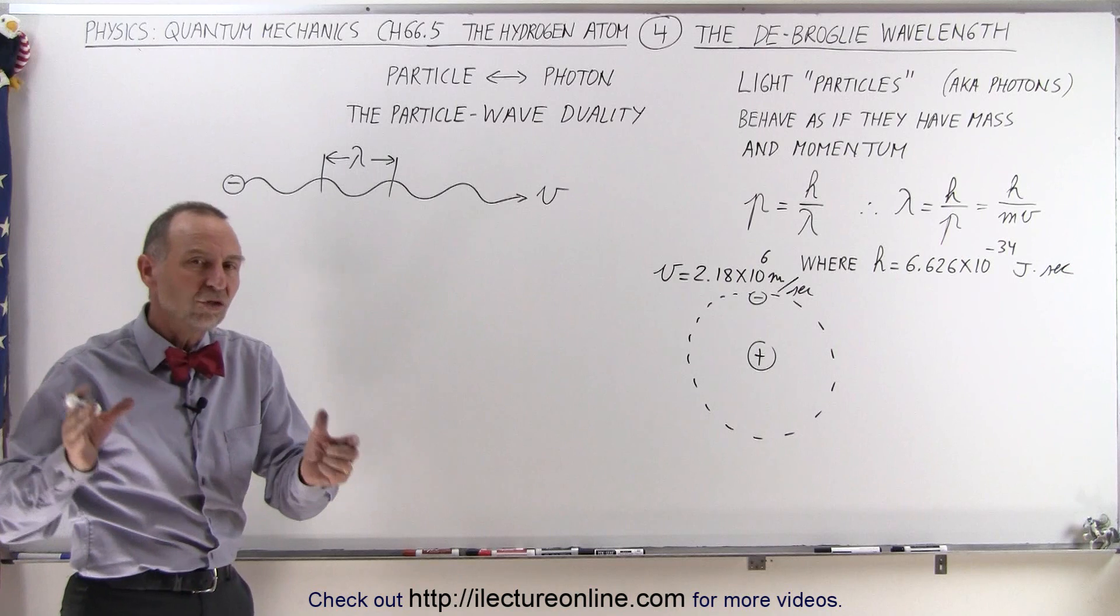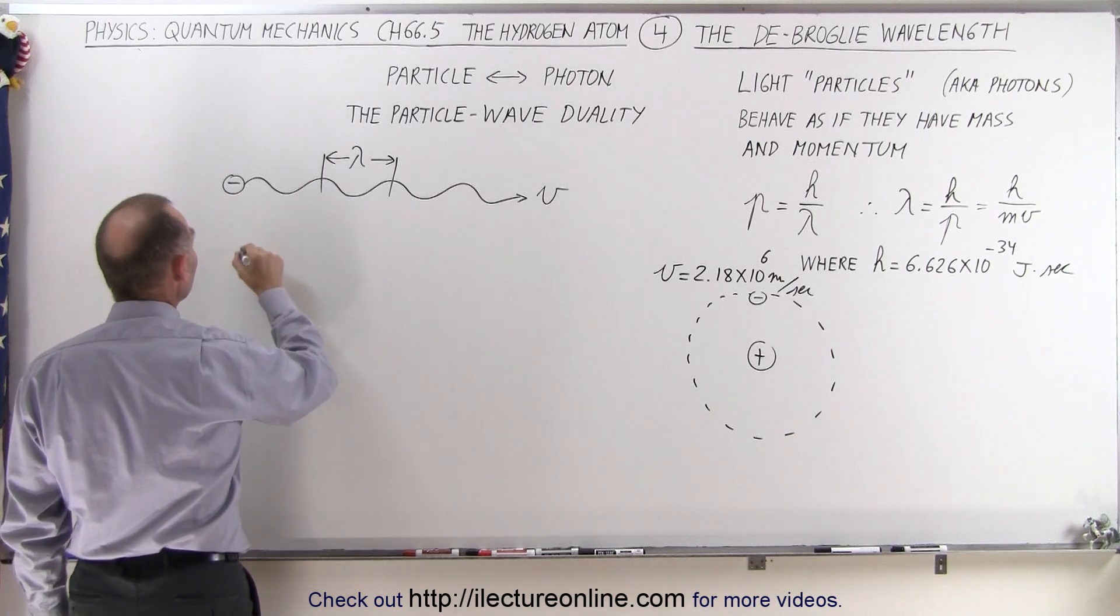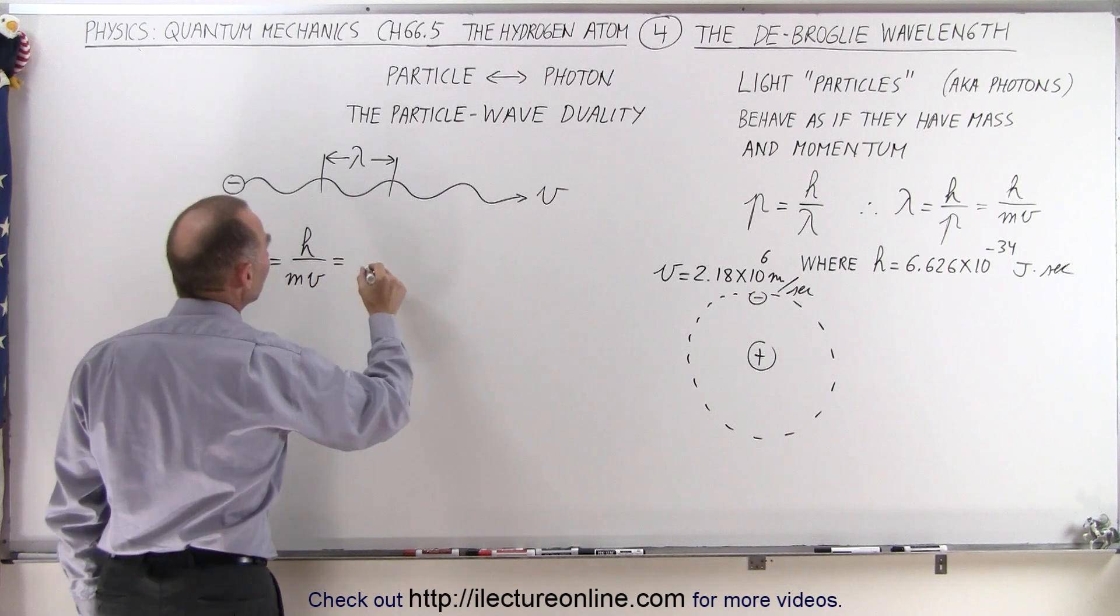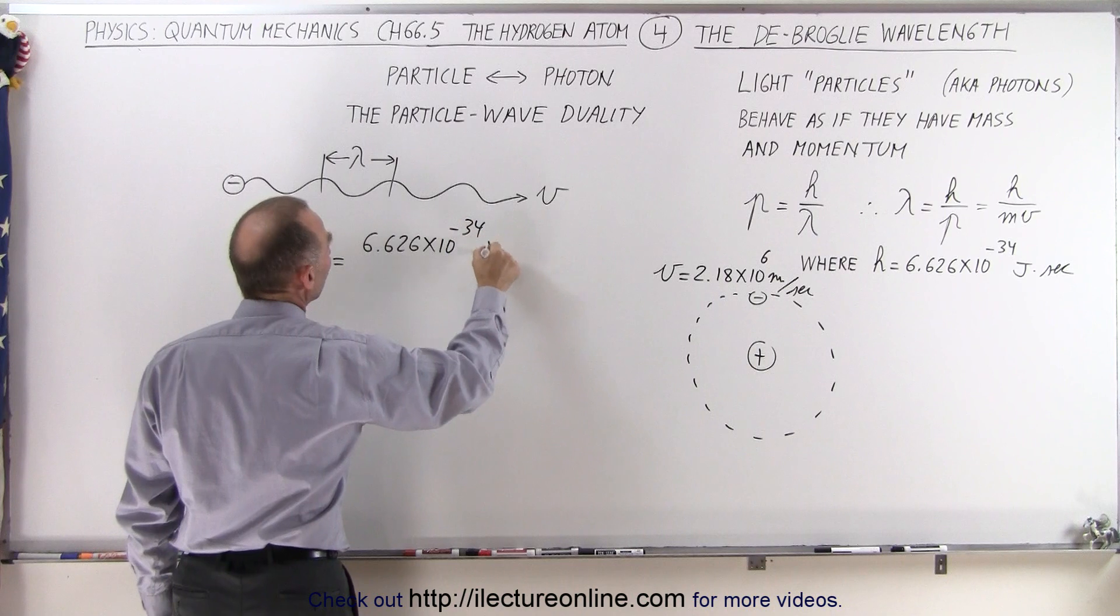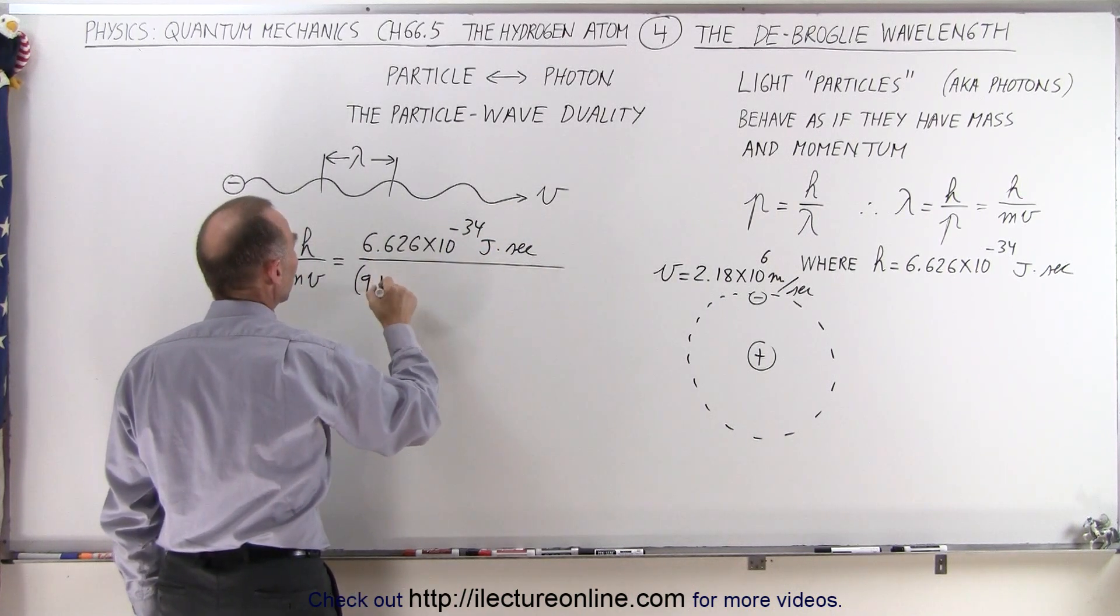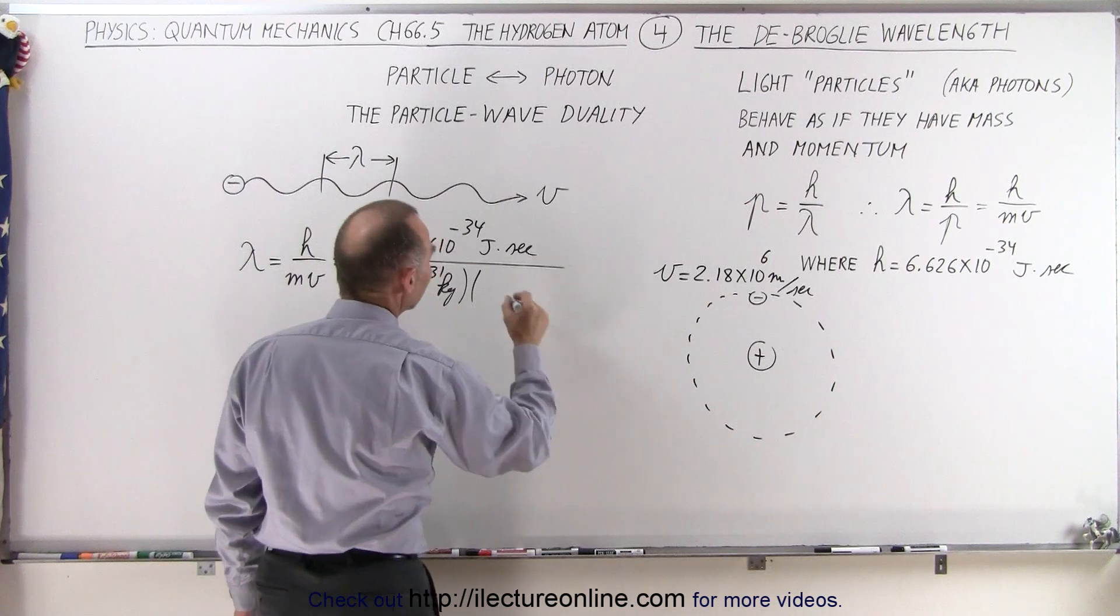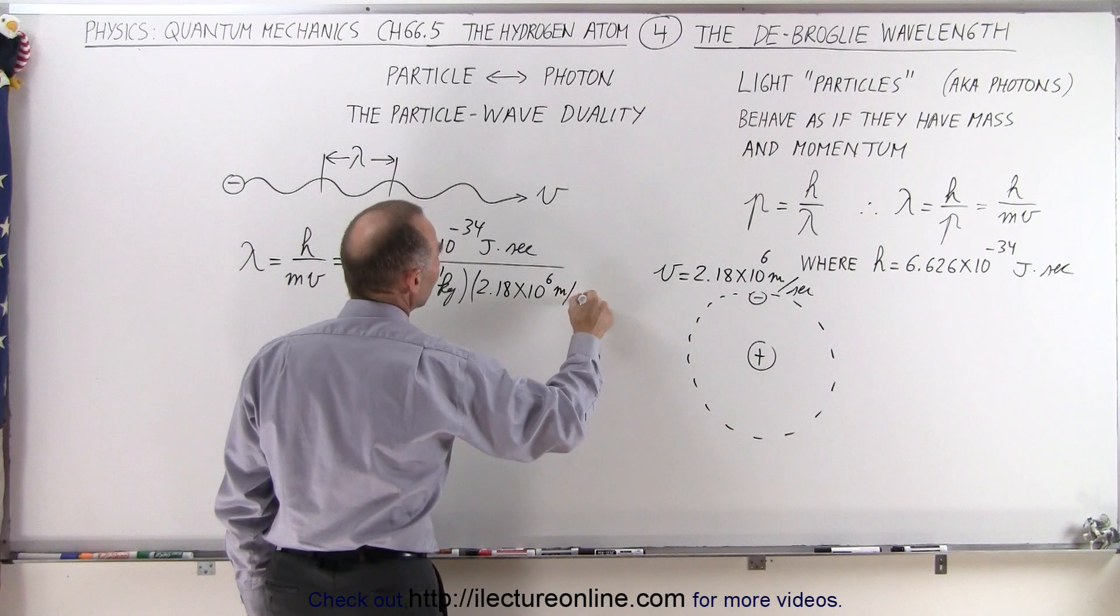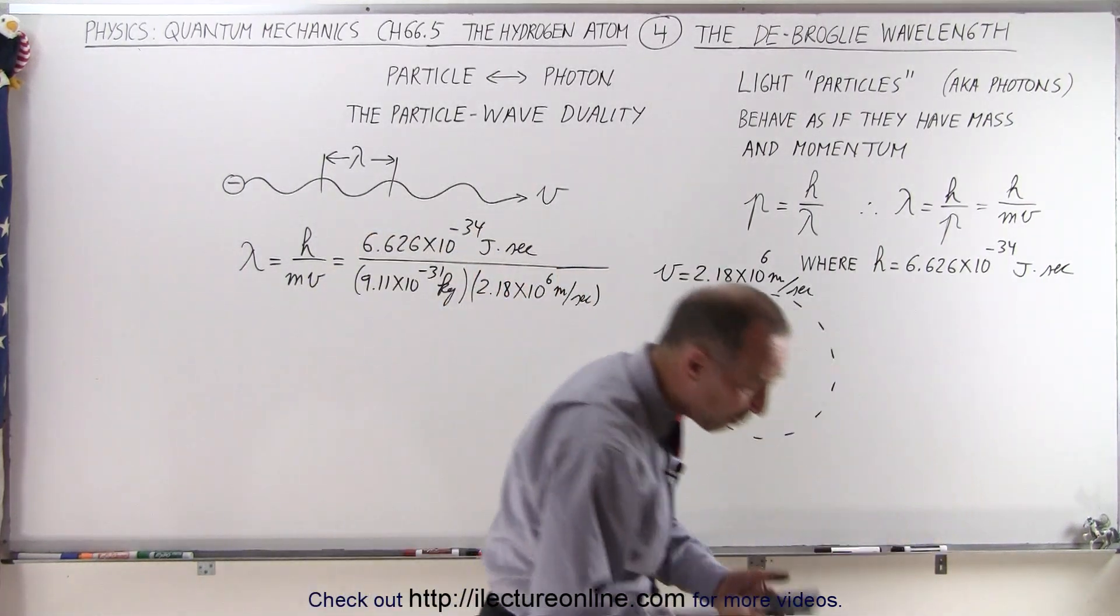Based upon that, what is the wavelength of an electron in a hydrogen atom? So when we calculate that, we can say that the wavelength is equal to h divided by the momentum, which is m times v. So in this case it would be 6.626 times 10 to the minus 34 joule-seconds, we divide that by the mass of an electron, 9.11 times 10 to the minus 31 kilograms, and we multiply times the velocity in the hydrogen atom of 2.18 times 10 to the sixth meters per second. And based upon that, can we calculate the wavelength of an electron moving in a hydrogen atom?